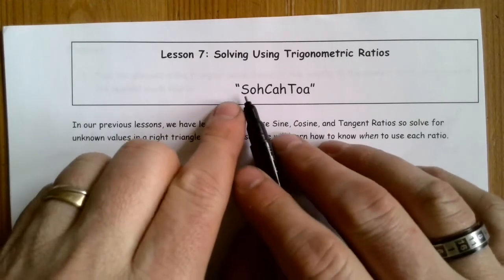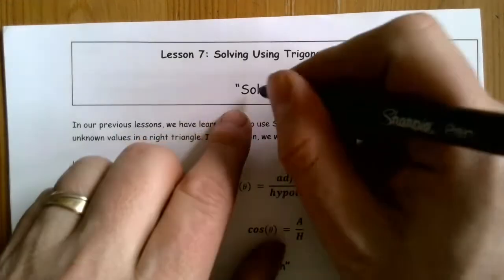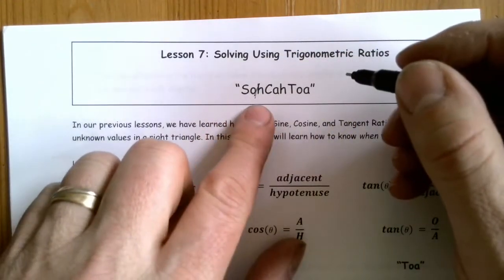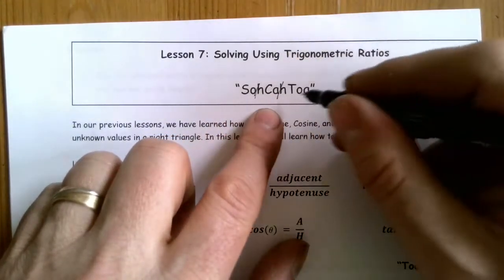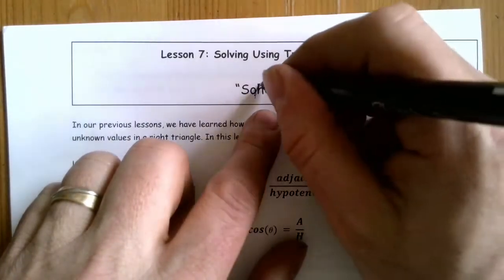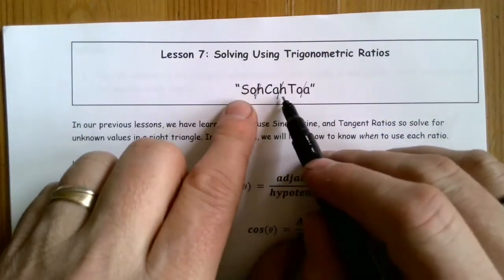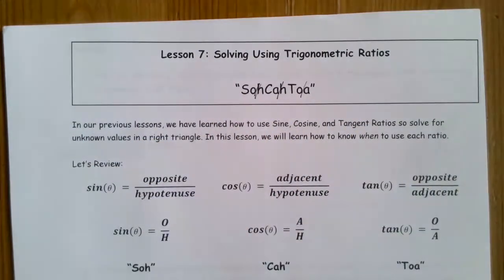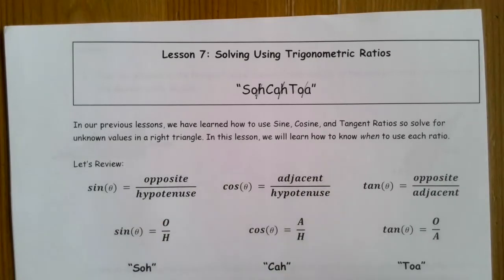S-O-H: sine is opposite over hypotenuse. C-A-H: cosine is adjacent over hypotenuse. T-O-A: tangent is opposite over adjacent. So we're dividing between the two letters that represent the sides. We've learned about sine, cosine, and tan in these previous lessons.